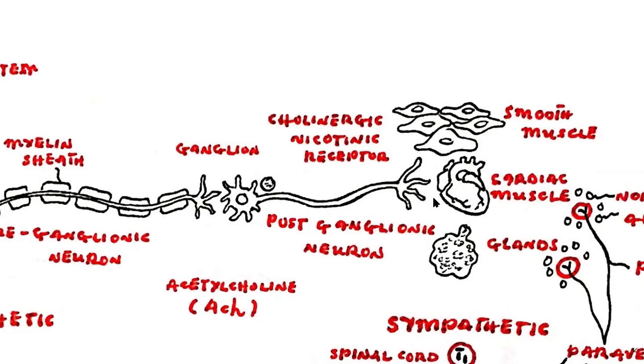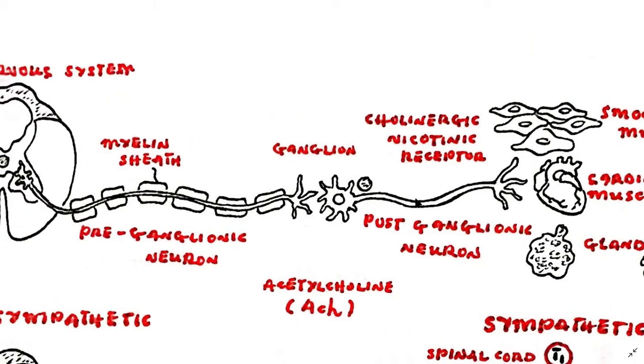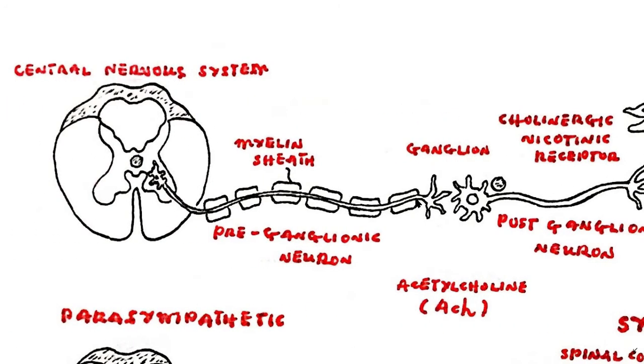Postganglionic neurons innervate the target organ or tissue. Preganglionic neurons of both sympathetic and parasympathetic systems release acetylcholine in the synapse, which acts on cholinergic nicotinic receptors on the postganglionic fiber. The type of postganglionic neurotransmitters and receptors correlates with the kind of system and organ involved.